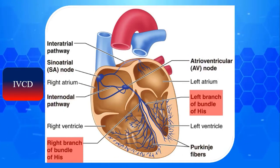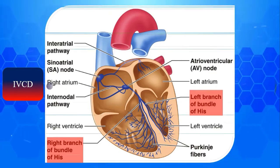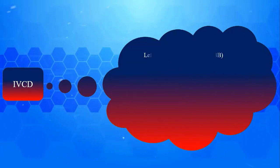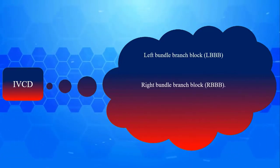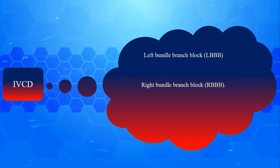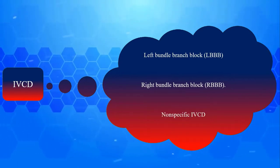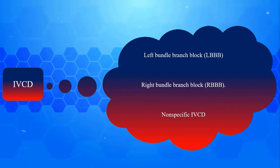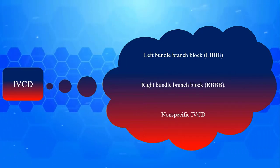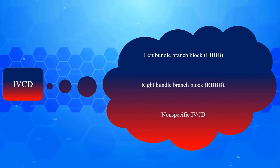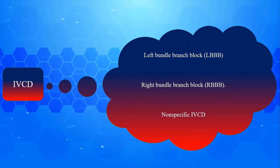IVCD classifies into three main categories: 1) left bundle branch block or LBBB, 2) right bundle branch block or RBBB, 3) non-specific intraventricular conduction delay or non-specific IVCD. The hallmark of all three categories is wide QRS complexes, which is more than 2.5 small boxes in duration.